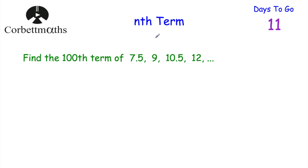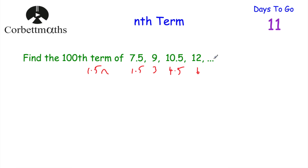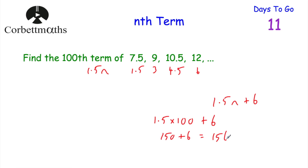This time we've got the sequence 7.5, 9, 10.5, 12, and so on, and I want to find the 100th term. It's gone up by 1.5 each time, so we have 1.5, 3, 4.5, 6 — that's 1.5n. To get from 1.5 to 7.5 we add 6, so the nth term is 1.5n plus 6. For the 100th term: 1.5 times 100 is 150, plus 6 is 156. And if you got that, well done.